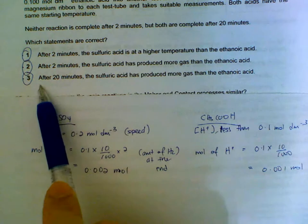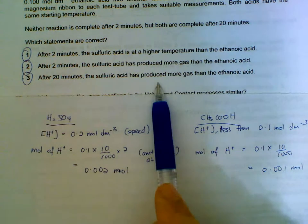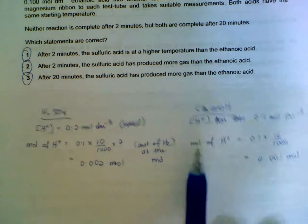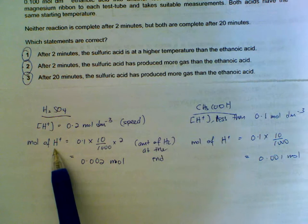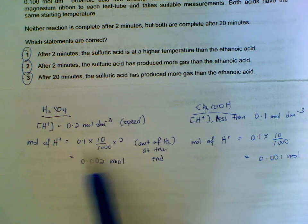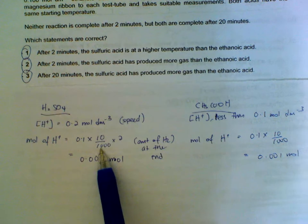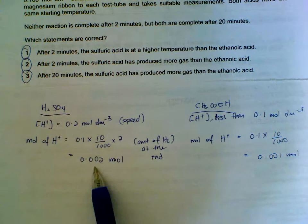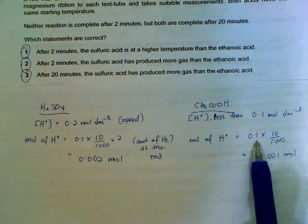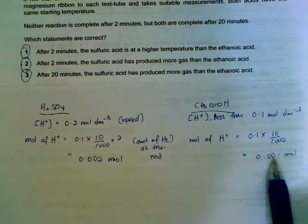Statement 3. How can we compare the amount of gas collected? The amount of gas is dependent on the number of moles of H⁺, not the concentration, but the number of moles. So we take 0.1 concentration times volume in dm³ multiplied by two because it's H₂SO₄. So this is the number of moles of H⁺ ions that can be released in total. For ethanoic acid, 0.1 concentration multiplied by volume. This is the amount of H⁺ that can be used.